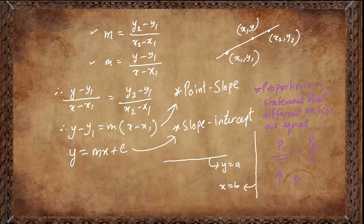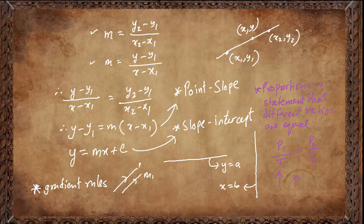Moreover, some gradient rules come in handy. If lines are parallel, the gradients are equal. So if two lines are parallel, we can say gradient m1 and m2 are equal.